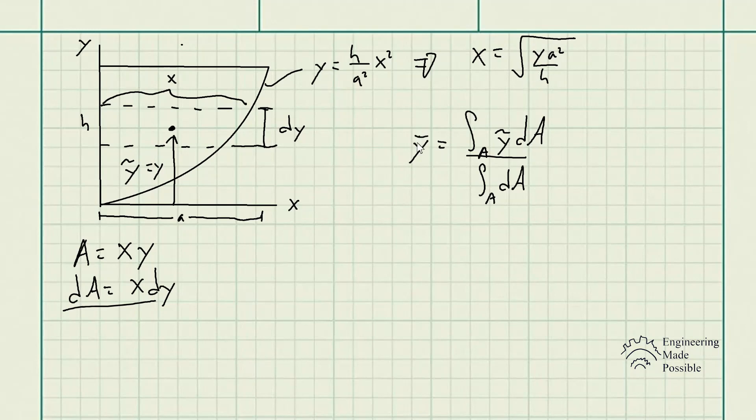So let's go ahead and plug it in for the y-bar here. So we have the integral from 0 to h since we're doing it with respect to the y-axis here. The y-bar is equal to y times dA. In this case, it's x dy. But of course, we solved for the x with respect to the y here, and we could just plug it in afterwards. Then the denominator is the integral from 0 to h, dA, x dy. And of course, we just plug in for x to further simplify this.